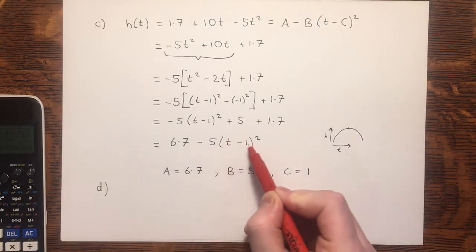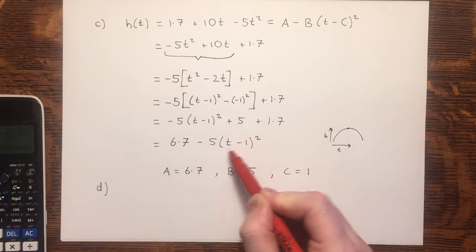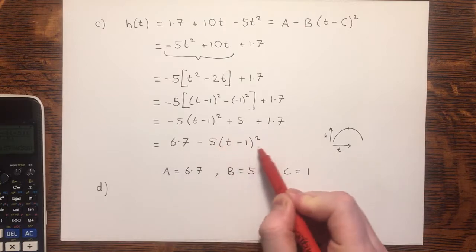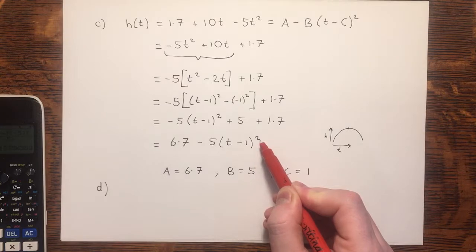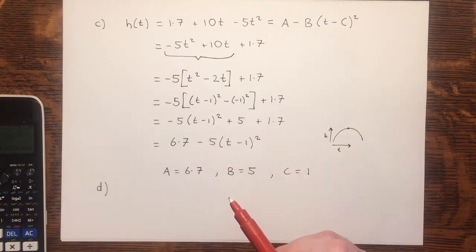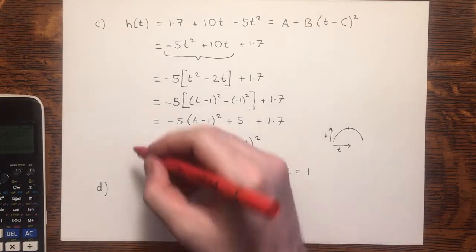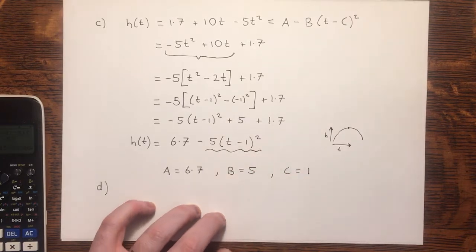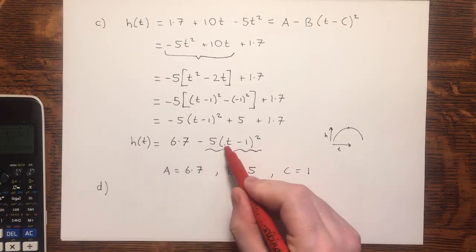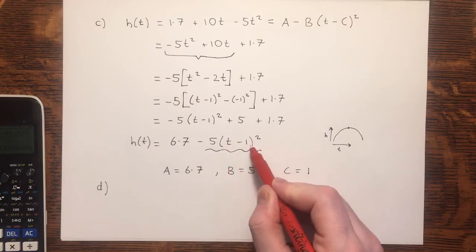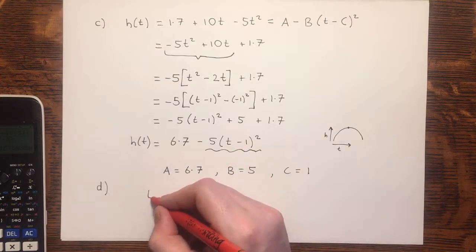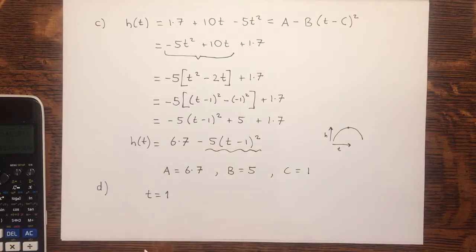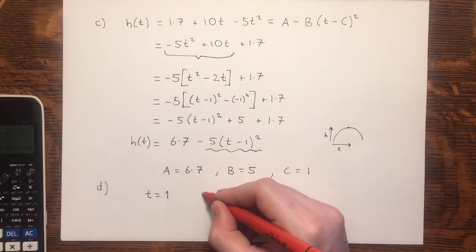This part of the equation here is in terms of T, so this bit will vary. Whatever happens to it, we'll be squaring it, and then taking away 5 lots. If we're subtracting this term here, this term here can only ever be positive because we're squaring it. If we're subtracting a positive number, that will make our total lower. The way to maximize our height, and remember this is the height, is to subtract as little as possible from it. So, I want to make this part equal 0. If T equals 1, 1 minus 1 is 0, 0 squared is 0, 5 times 0 is 0. If T equals 1, I will be subtracting the least, giving me this part, the leftover, having nothing subtracted from it, giving me a height of 6.7 meters at a time of 1 second.